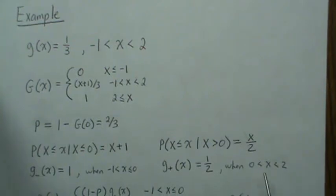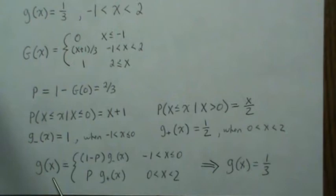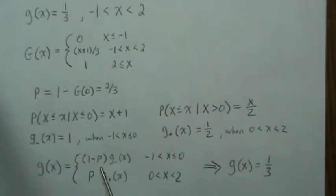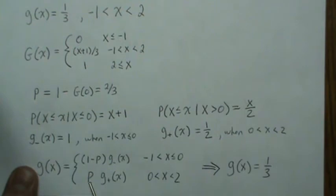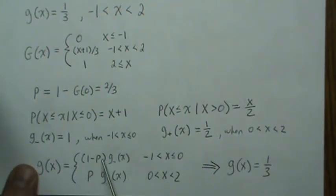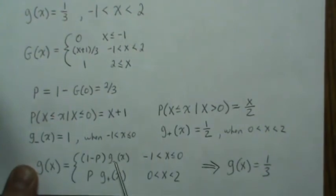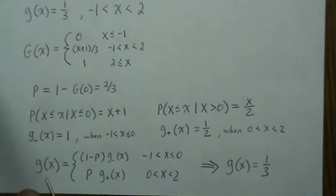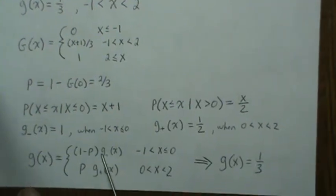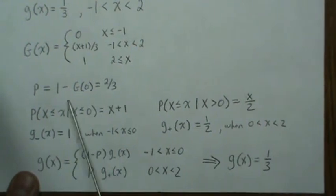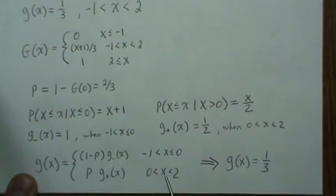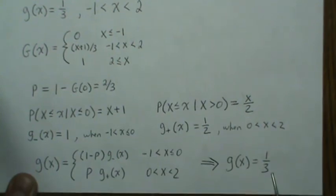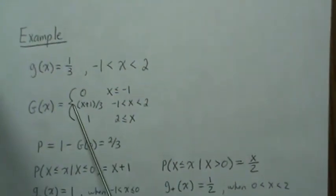Note the domains: g⁻(x) applies for x < 0 and g⁺(x) for x > 0. Now applying our formula: g(x) = (1 - p)·g⁻(x) + p·g⁺(x). With p = 2/3: (1/3)·1 = 1/3 for x < 0, and (2/3)·(1/2) = 1/3 for x > 0. Both pieces equal 1/3, so the density is just 1/3 everywhere on [-1, 2] — which is exactly the uniform distribution we started with. The decomposition checks out.